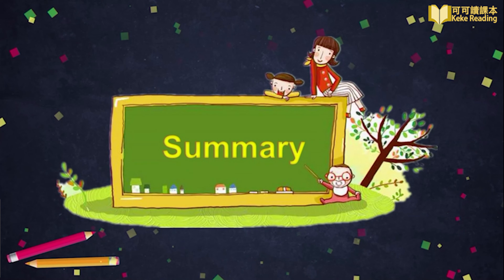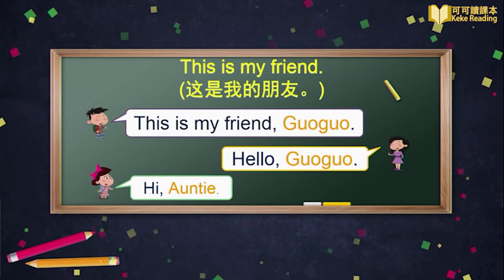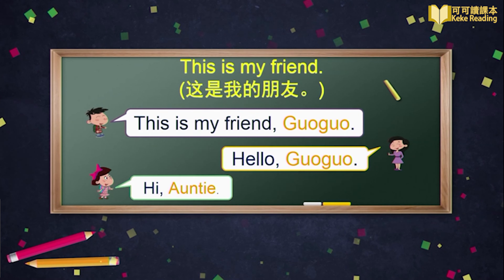Hi, boys and girls. Today, we learned how to introduce our friends by saying: This is my friend, Guo Guo. Mao Mao introduced Guo Guo to his mom, and they said hi and hello to each other. 通过说这是我的朋友Guo Guo，毛毛把Guo Guo介绍给他的妈妈，毛毛妈妈和Guo Guo彼此也进行了打招呼问候。